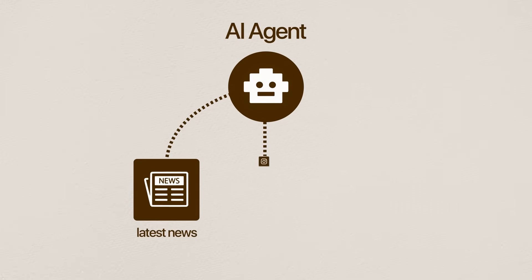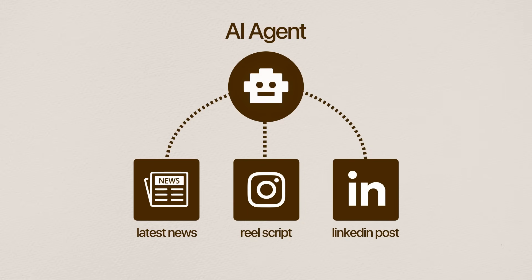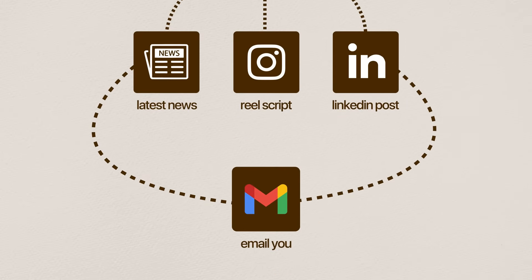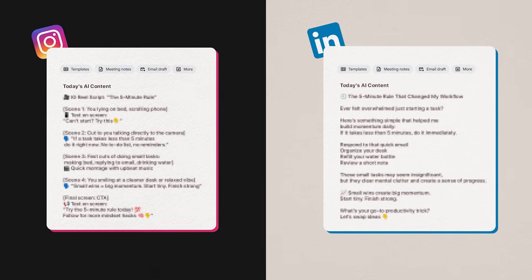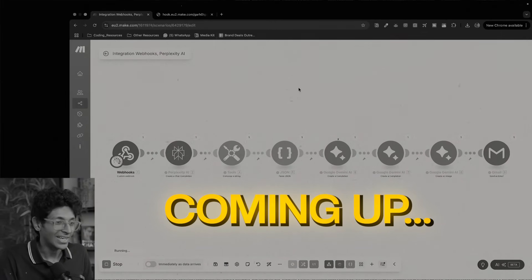We'll take that news and turn it into a real script. We'll turn it into a LinkedIn post with text and image as well, and it will email it to you every single day. So every day you'll get a reel script for an Instagram reel to record and a LinkedIn post that you can just post right away and grow your personal brand. If you want to start creating content, build your personal brand, this is the AI agent you need to build into your workflow.